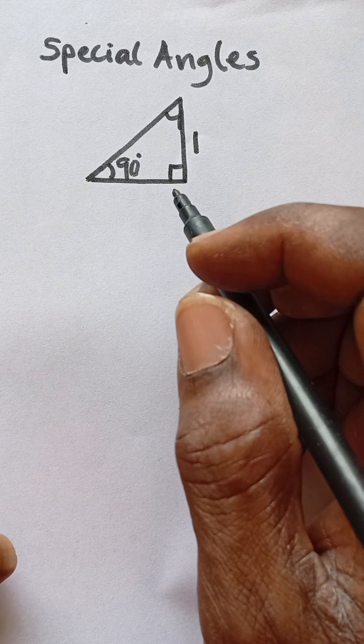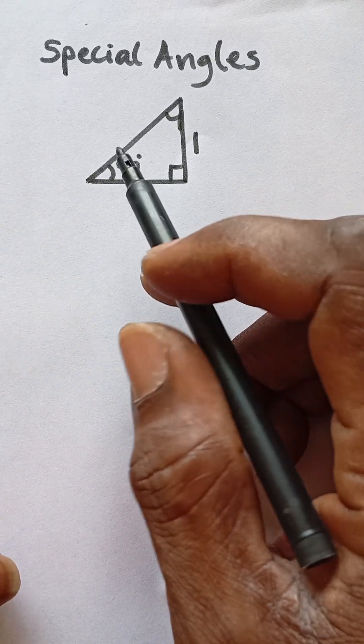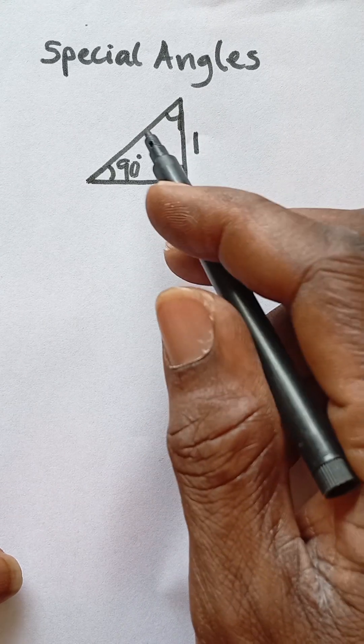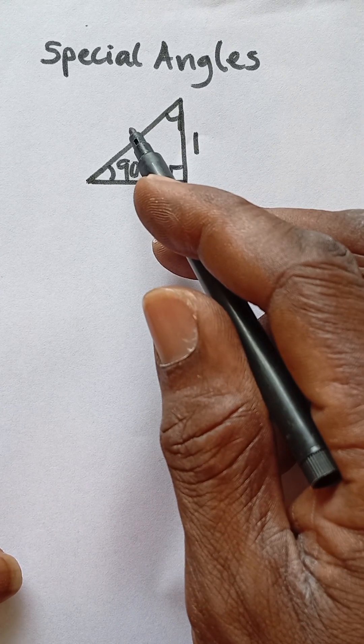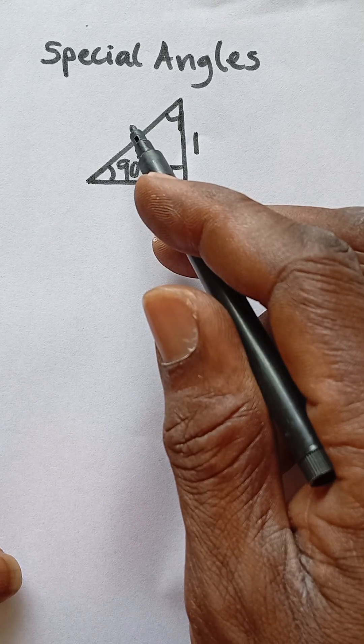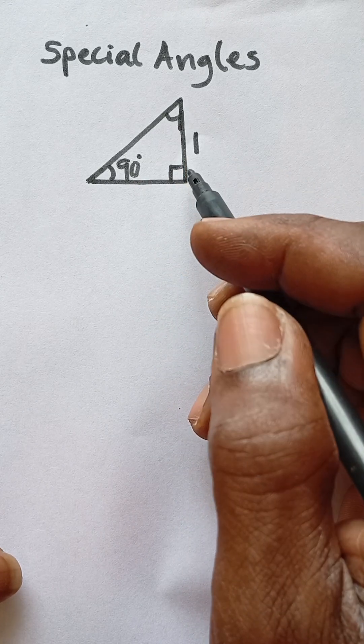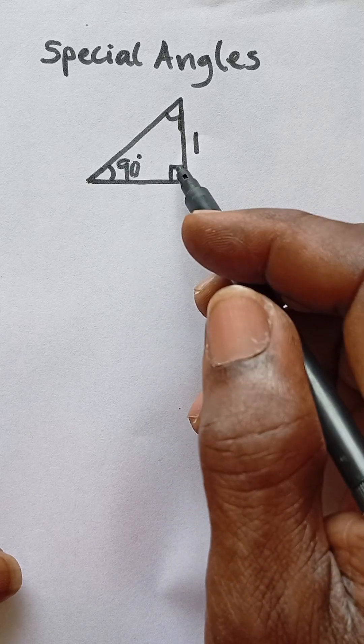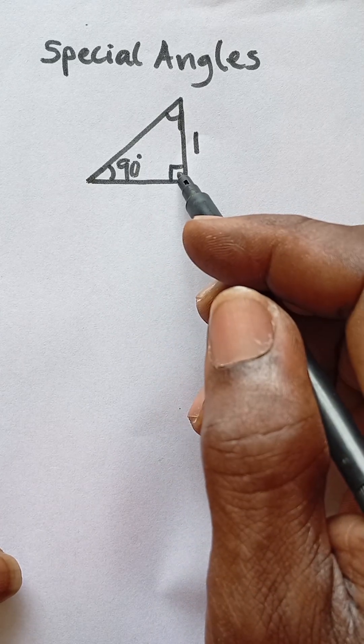Let's look at the special angles, specifically angle 90. This is a right angle triangle. This side is one. The hypotenuse is also one because this is an isosceles triangle. This is 90 degrees. The base angles of an isosceles triangle are equal, so if we are taking...